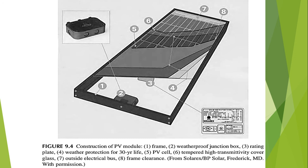Unfortunately, bypass diodes can fail over time and may need to be replaced. The cover of the junction box is usually removable for servicing purposes. However, many modern solar panels now use more advanced and long-lasting diodes, so in some cases the junction box lid is not removable, making the diodes difficult to replace or non-serviceable.